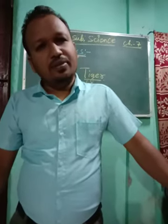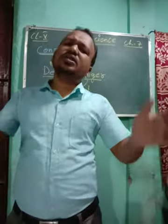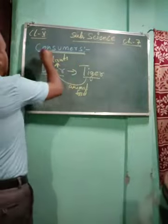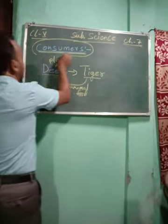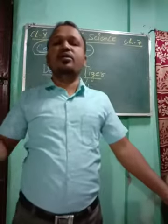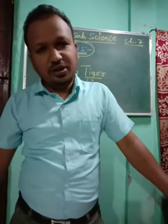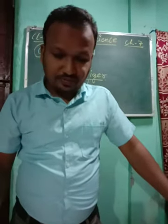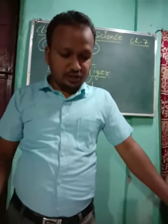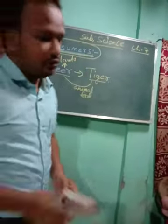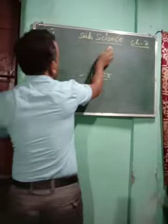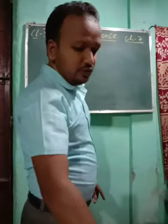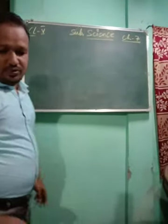These are the examples of consumers. Herbivore animals, carnivore animals, and omnivore animals — all are known as consumers because everyone depends upon plants or animals for their food. This was about consumers. Next we are going to learn about scavengers — consumers was quite easy, now we move to scavengers.